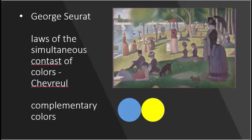Georges Seurat, trained in the École des Beaux-Arts, sought to correct Impressionism, which he found too intellectually shallow. He preferred the clarity of structure he saw in classical relief sculpture, and a systematic but actually quite emotive use of color suggested by optics and color theory. Seurat was particularly interested in the law of the simultaneous contrast of colors, formulated in 1820 by Michel-Eugène Chevreul.